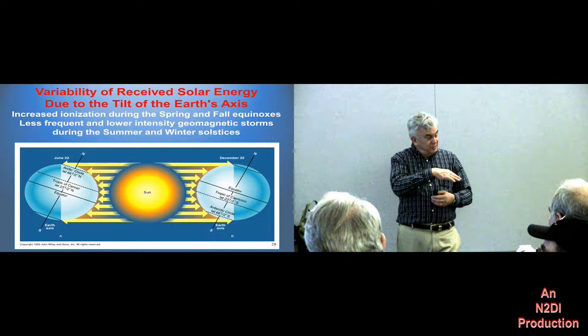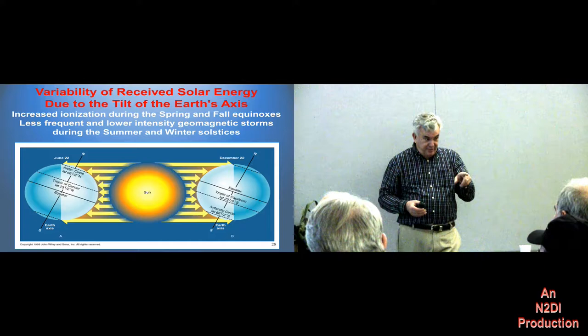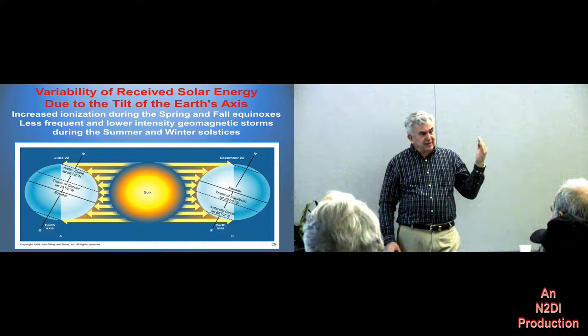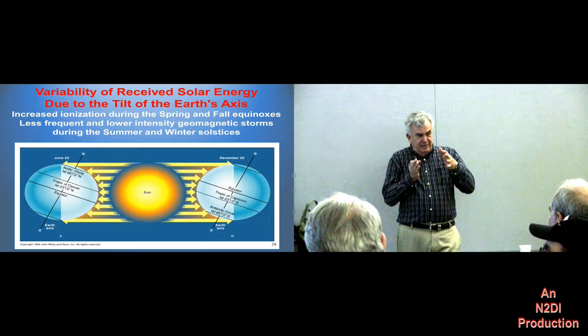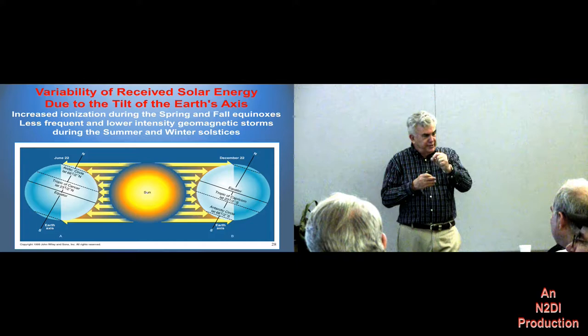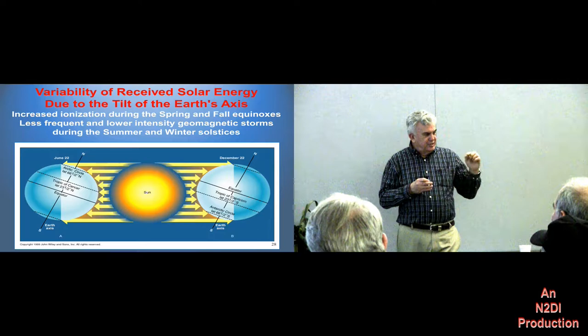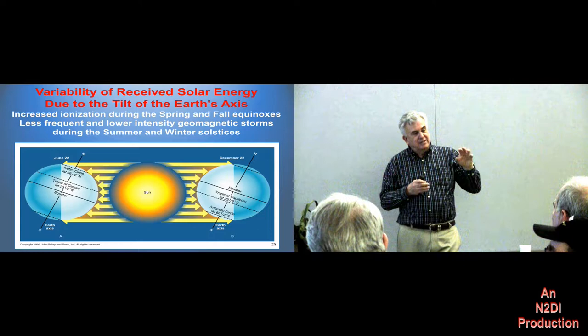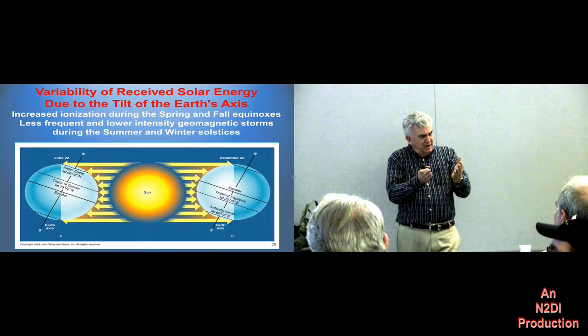Gray line is still another thing. What happens on the gray line is the electron density — the gray line is the boundary between daylight and darkness, also called the terminator. Electron density tends to be constant along that line, so you get propagation that can carry signals more than halfway around the world by following this area of relatively constant electron density at the border between daytime and nighttime.